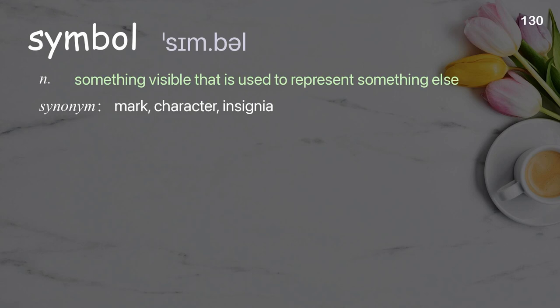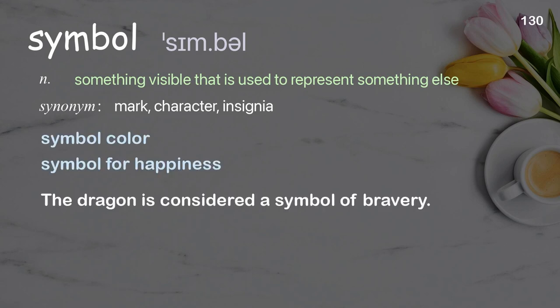Symbol: Something visible that is used to represent something else. Examples: Symbol color, Symbol for happiness. The dragon is considered a symbol of bravery.